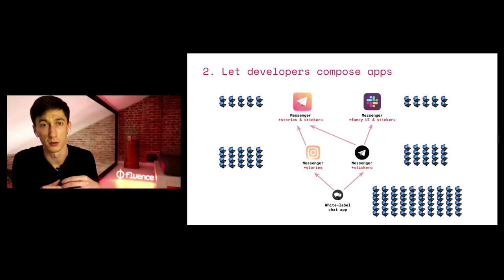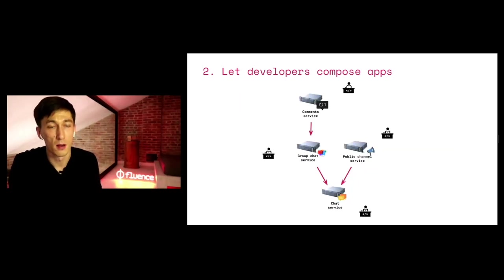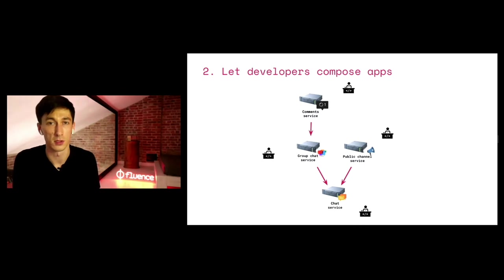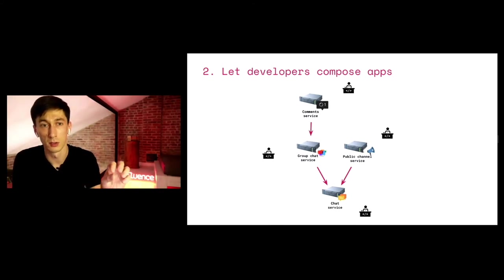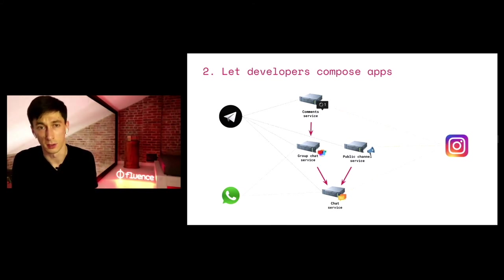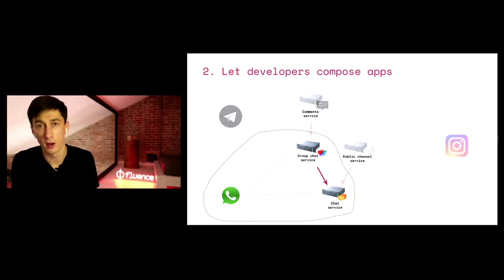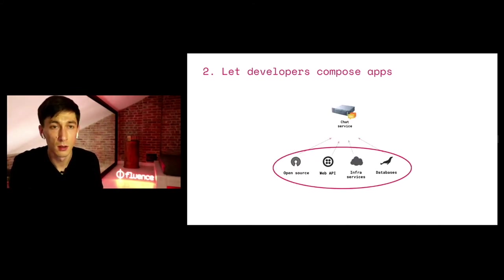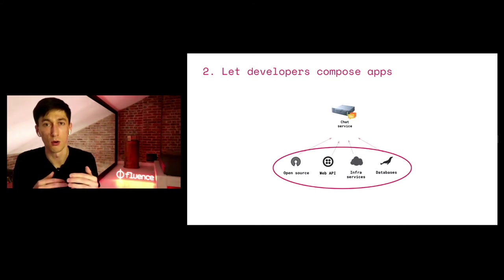If there is a way to monetize these users, then the original developer can get money out of it — and the higher this type grows, the more users and value are attracted to the lower level. Technically, every application consists of services: for example, chat can consist of a group chat service, comments can be built from a group chat service, public channels built from a chat service — they can all be created by different developers and packaged as different applications. If I have just a chat service plus group chat service, I have WhatsApp; if I have all of them together, I get Telegram; if I think of them differently with comments, public channel, and chat, I can have Instagram.